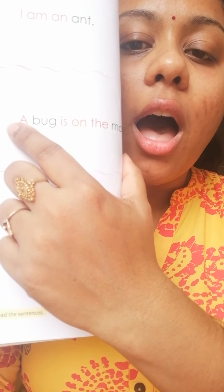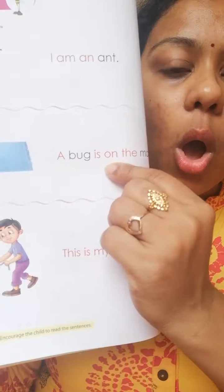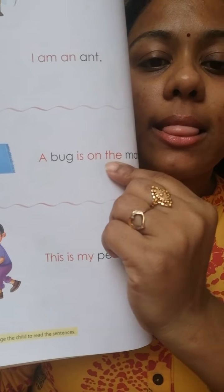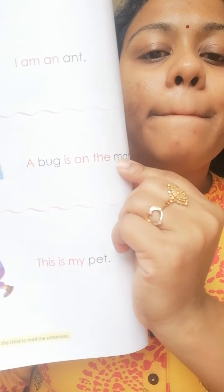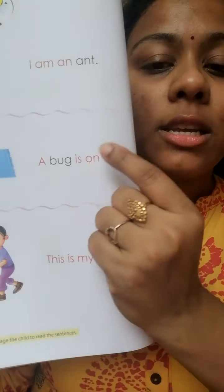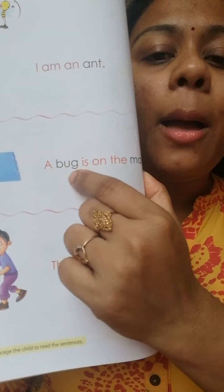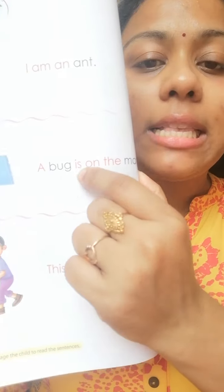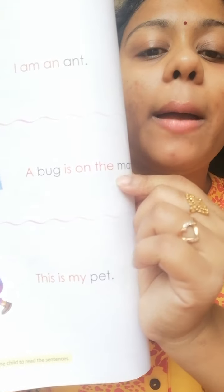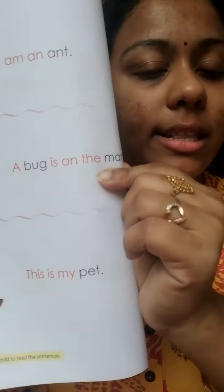Now see, the full sentence is: A bug is on the mat. A bug is on the mat.